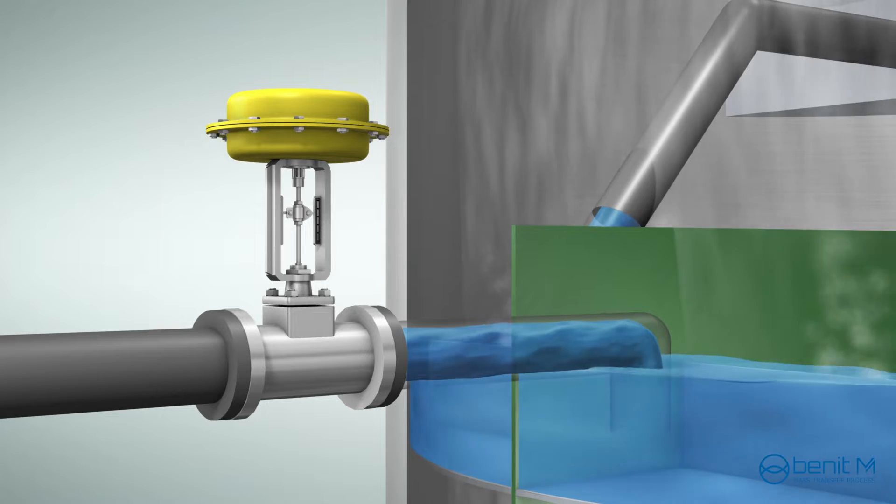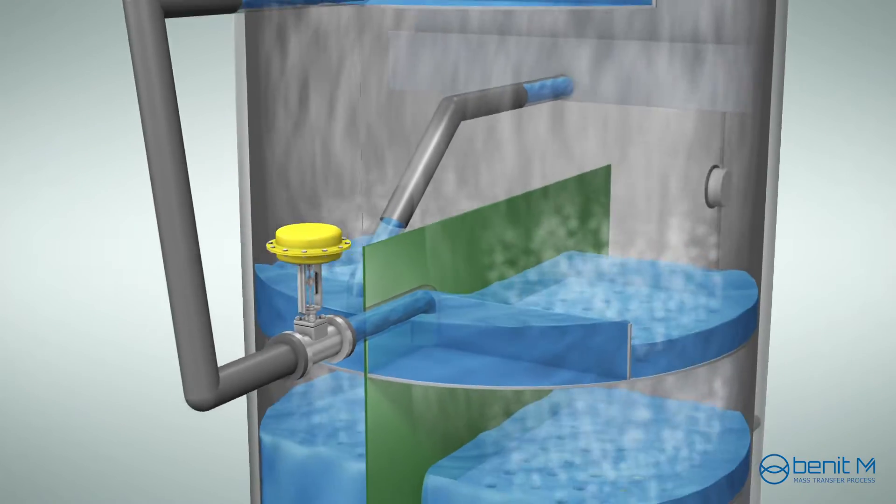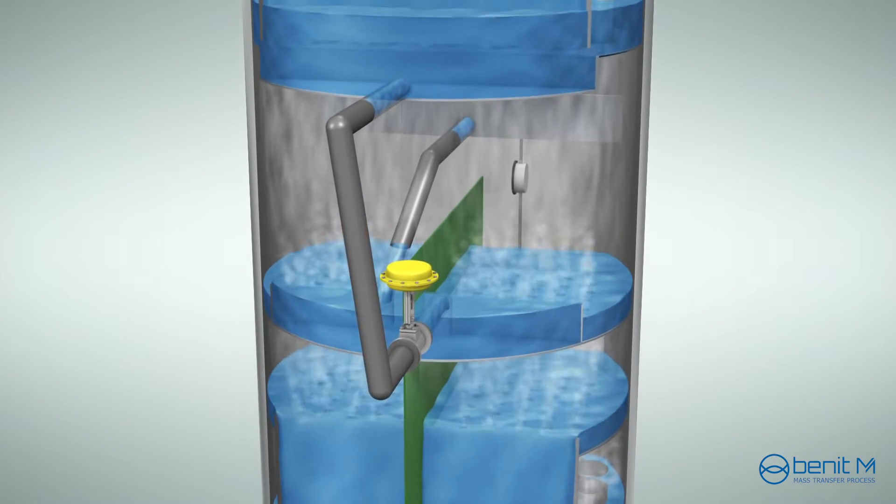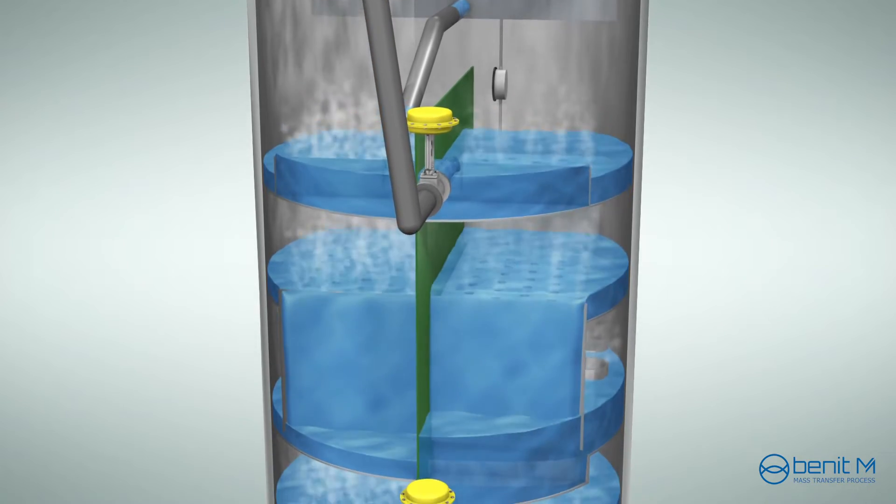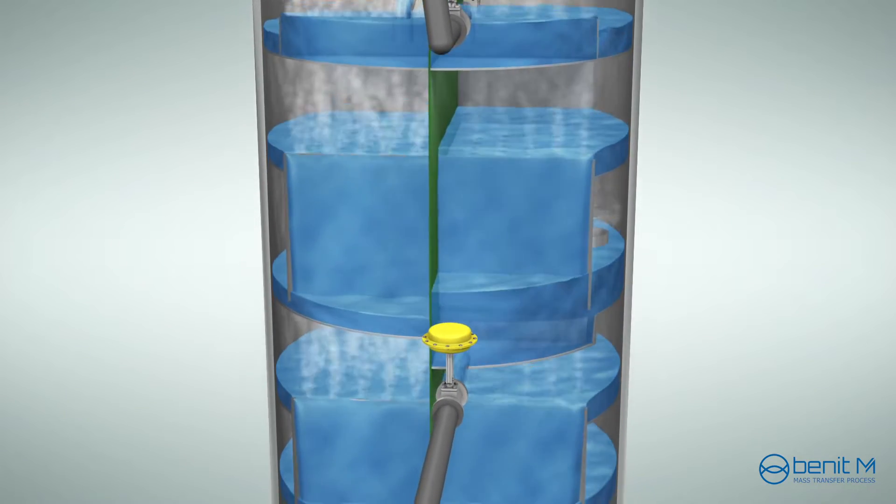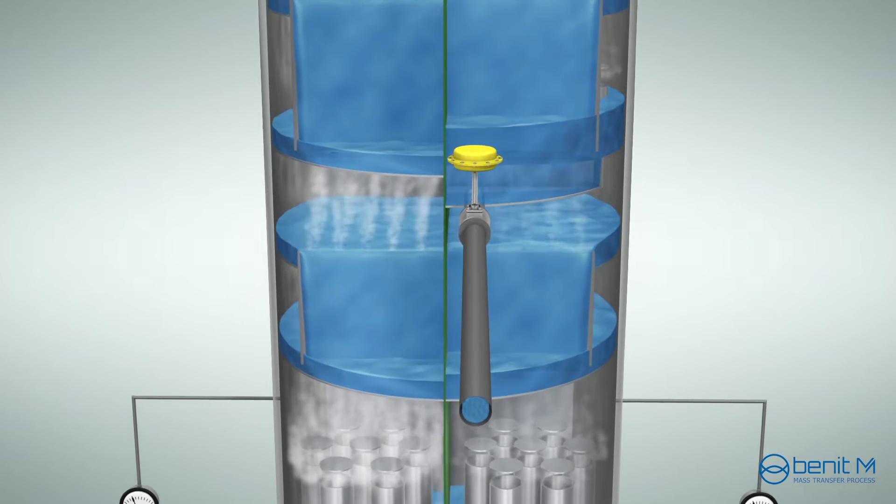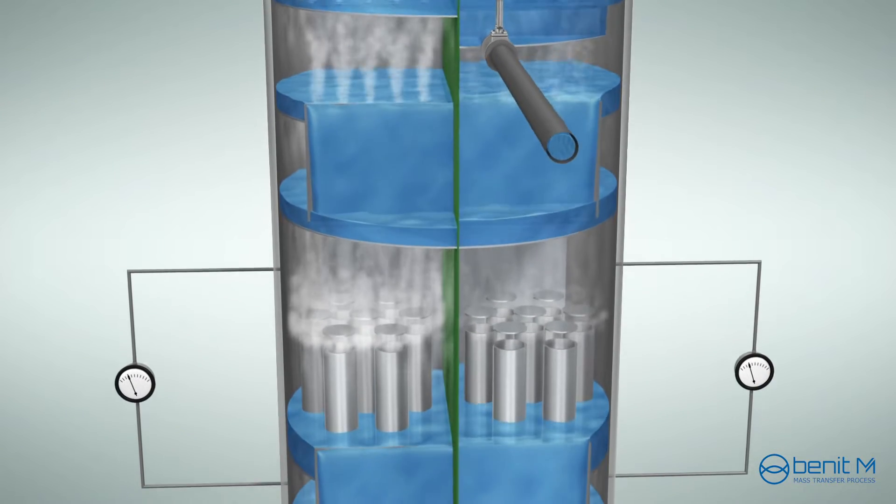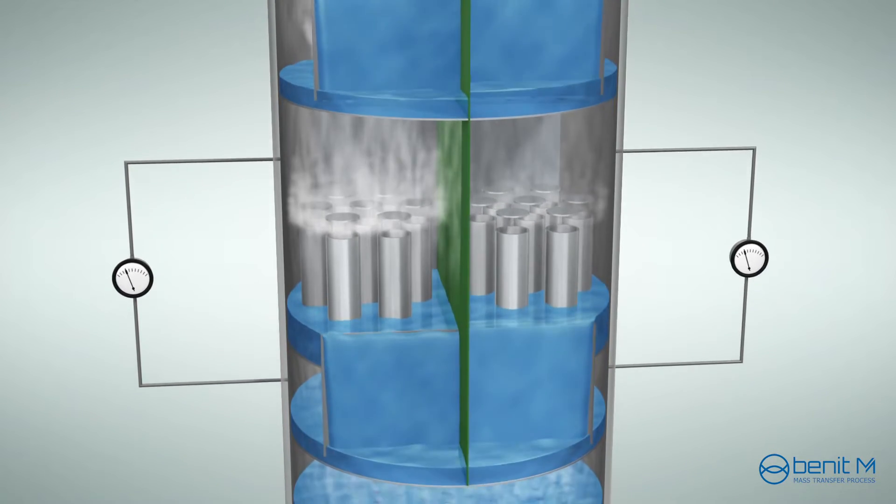Operator can adjust the liquid split ratio as dividing wall columns are normally equipped with an active liquid splitter. When the liquid load increases in main fractionation section, the liquid load in pre-fractionation section is decreased because the total reflux rate remains the same.